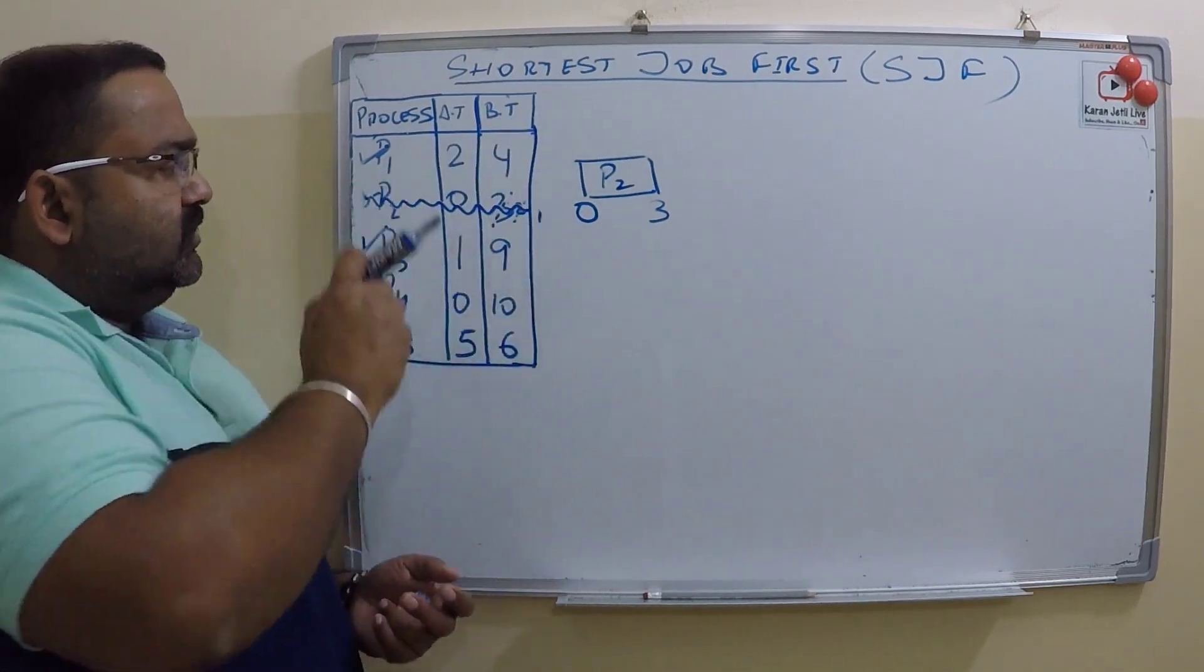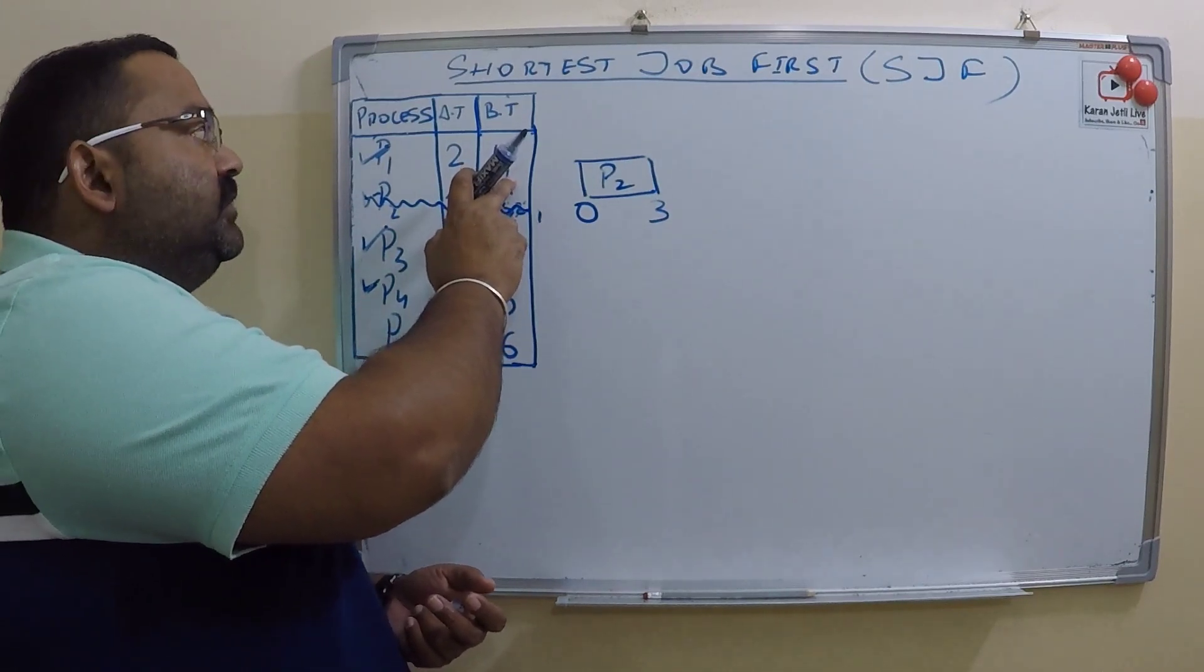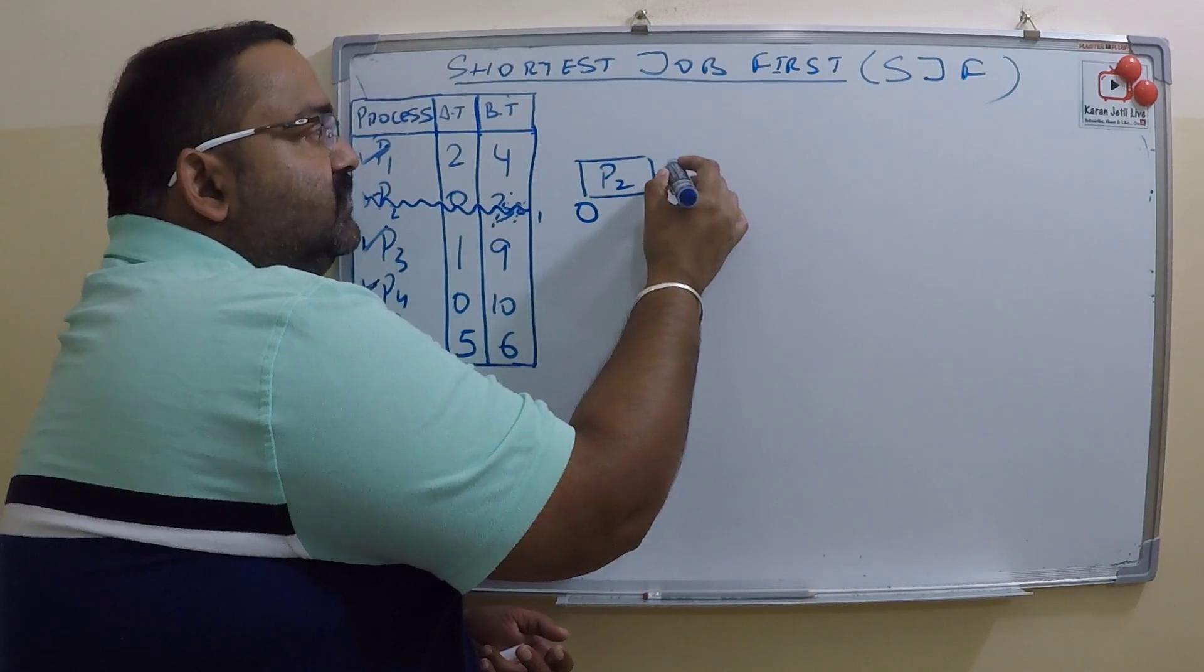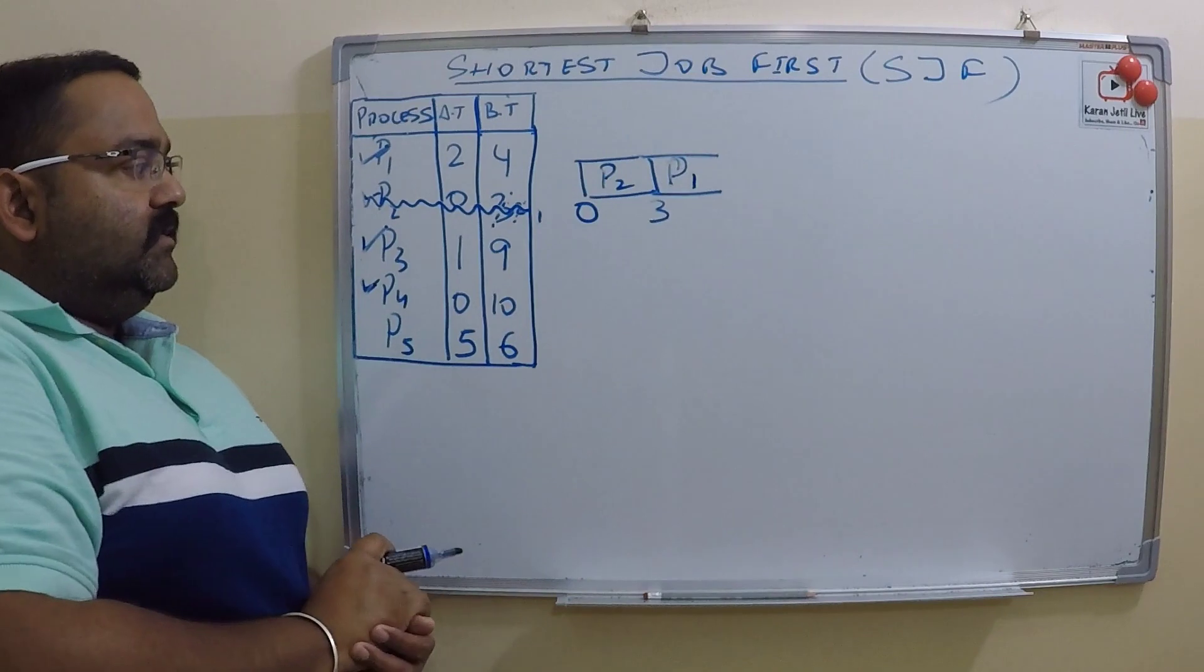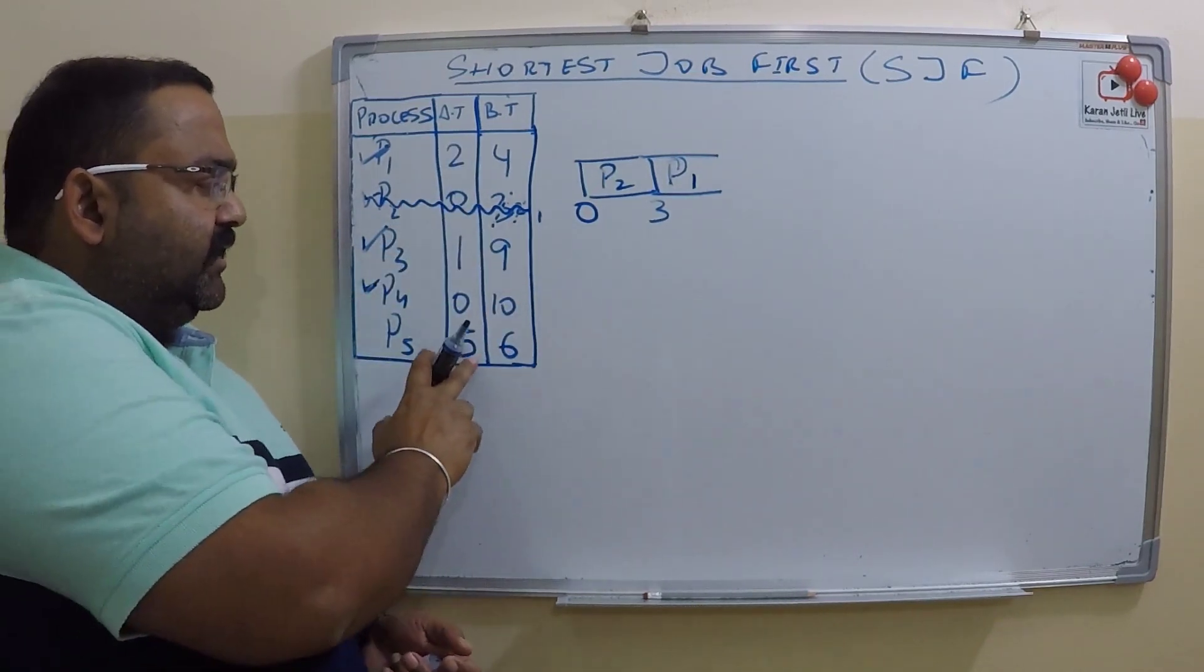Now out of these, whose burst is smallest? Shortest job is P1, so at time three P1 will start executing. When P1 starts executing at time three, at time five, P5 will come.